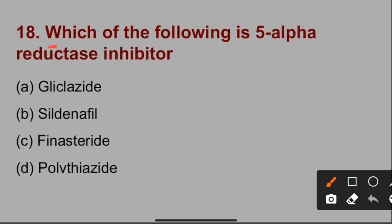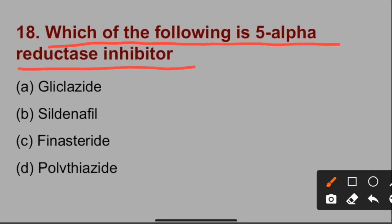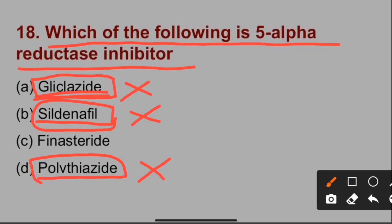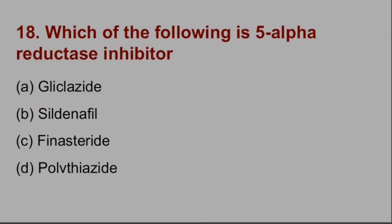Question number 18: Which of the following is a 5-alpha reductase inhibitor? Gliclazide is a sulfonylurea used in diabetes — incorrect. Sildenafil is a phosphodiesterase-5 inhibitor used in erectile dysfunction — incorrect. Polythiazide is a diuretic — incorrect. Option C, finasteride, is a 5-alpha reductase inhibitor. So the correct option is C.